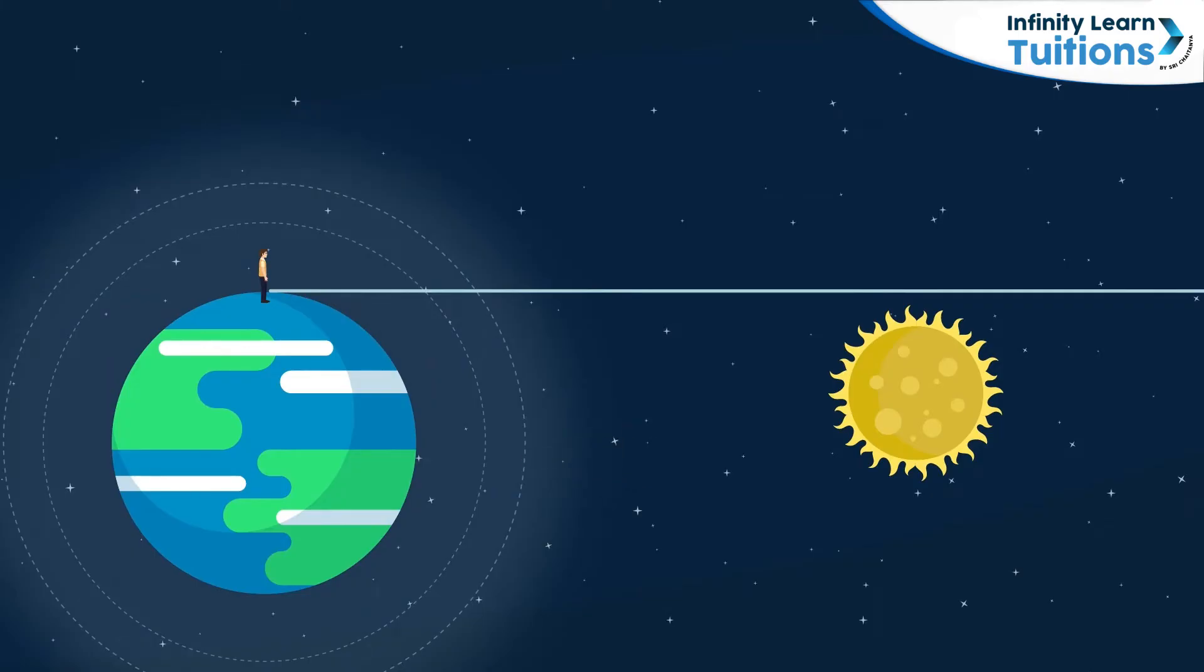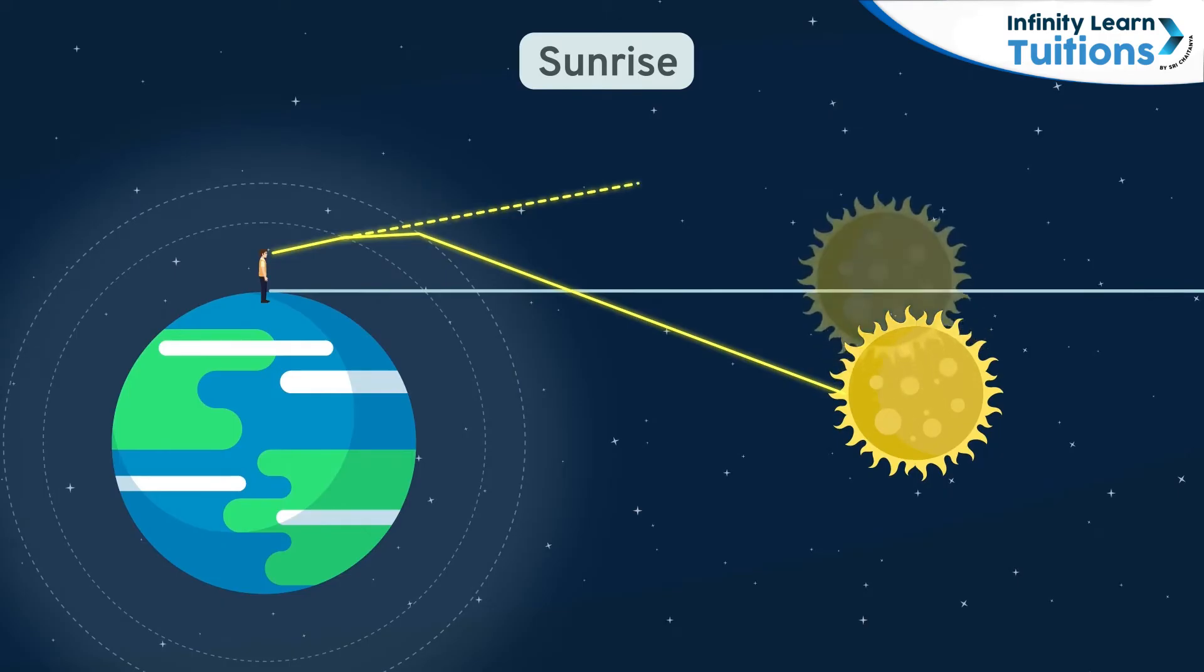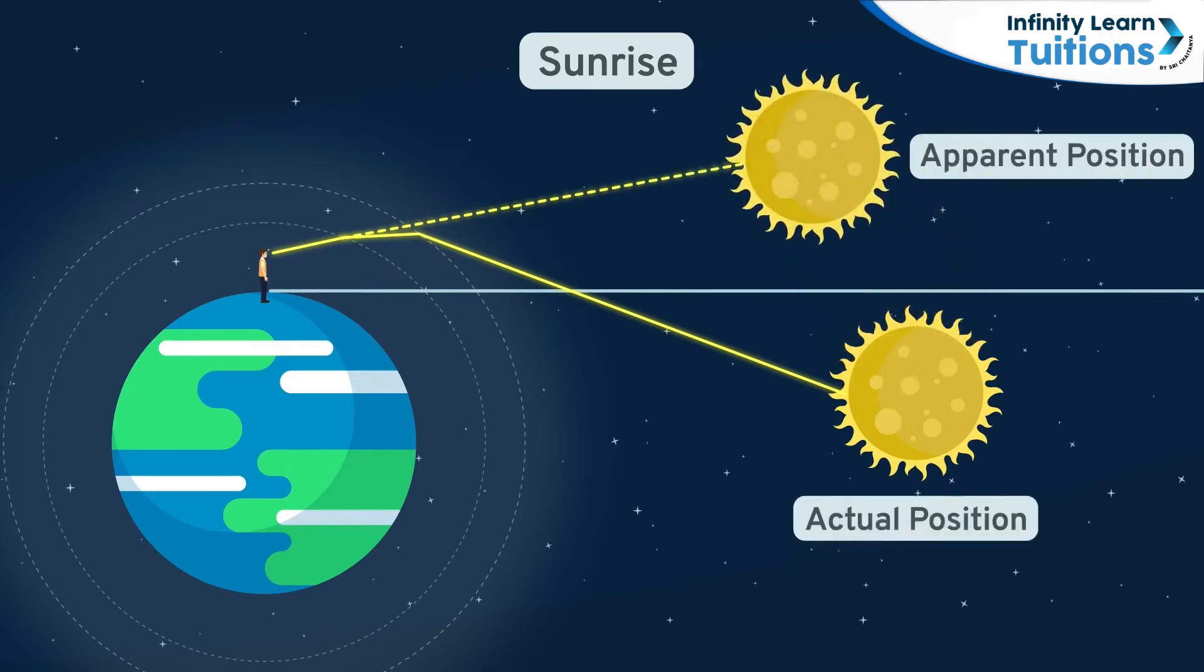When the sunlight travels from vacuum to this envelope of air, it undergoes refraction or bending because of a change in the medium. Now, if we trace back the source of this bent light ray, they seem to appear from a higher position than the actual position of the sun. That is why the sun appears to have risen even though it hasn't.